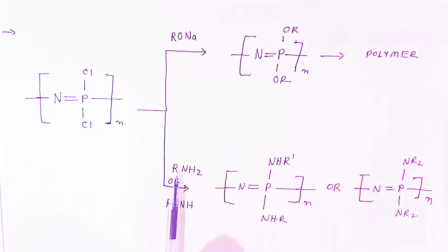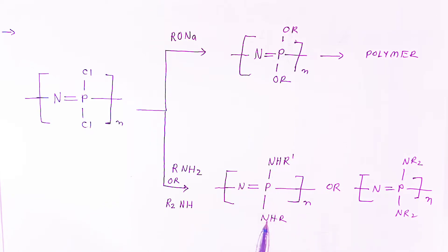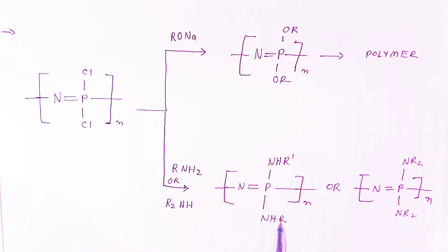If you add alkyl amine or dialkyl amine, they will attach to the phosphorus. The hydrogen is replaced by two alkyl groups, and you are getting this type of polymer.